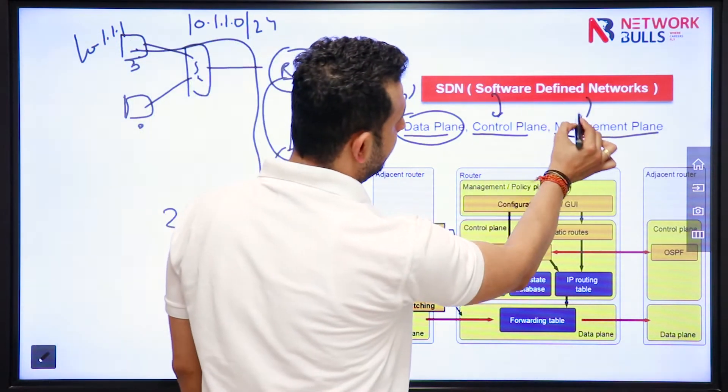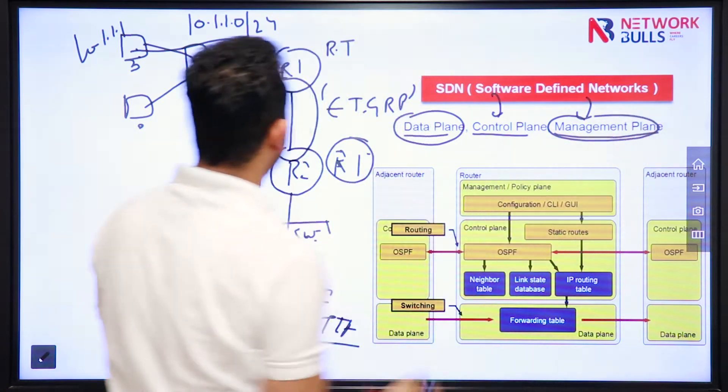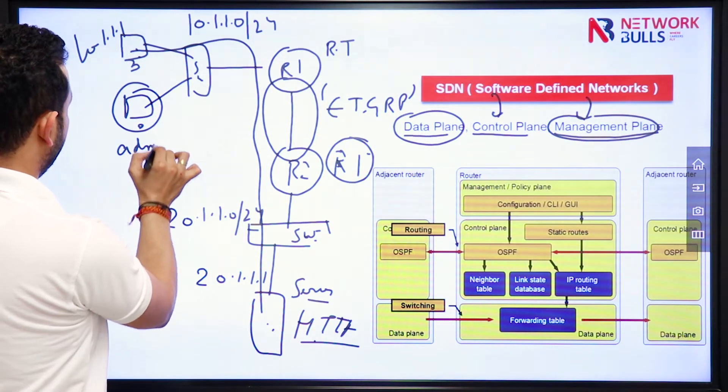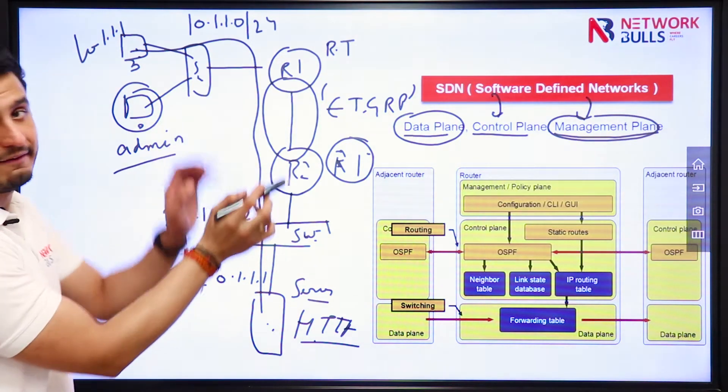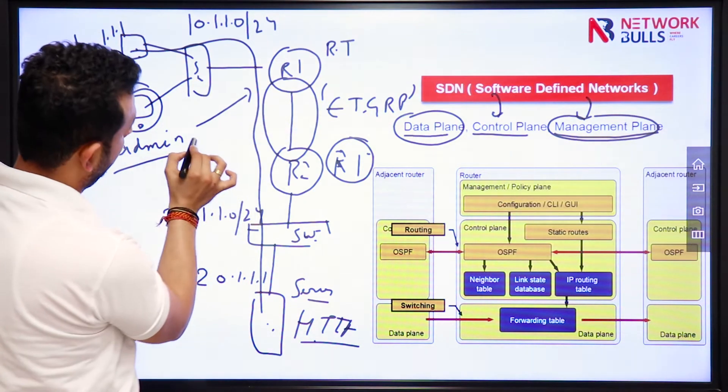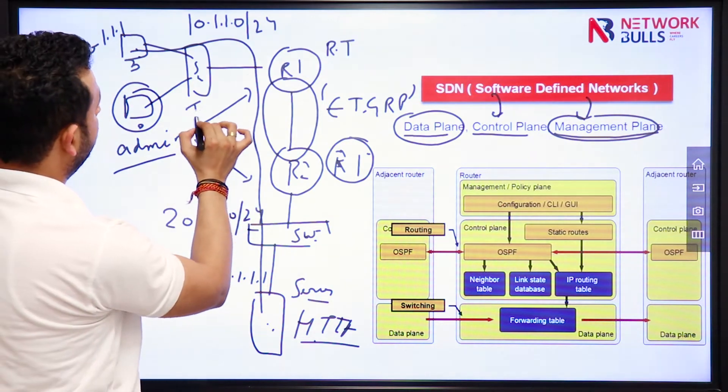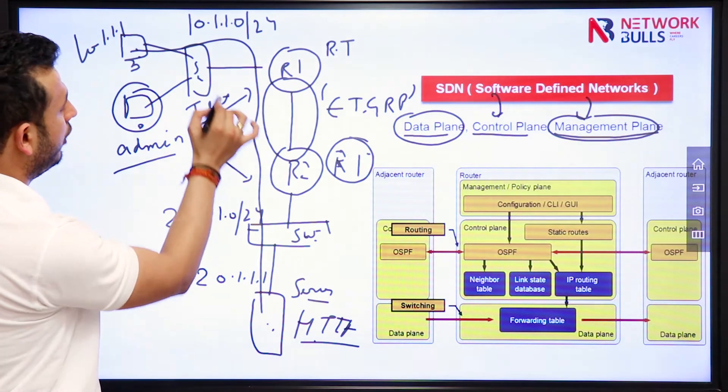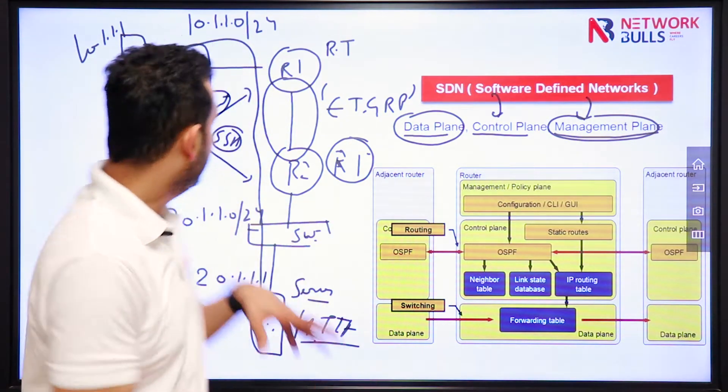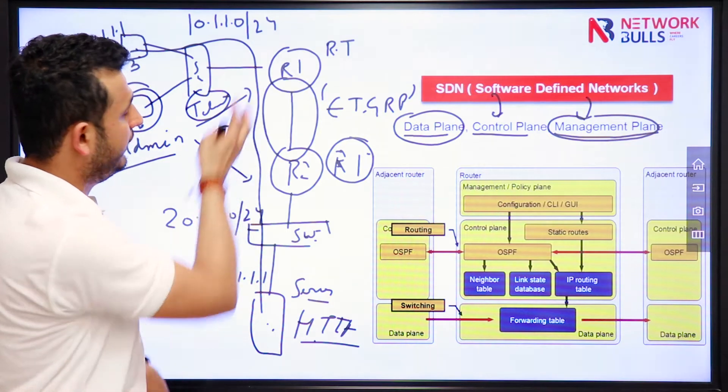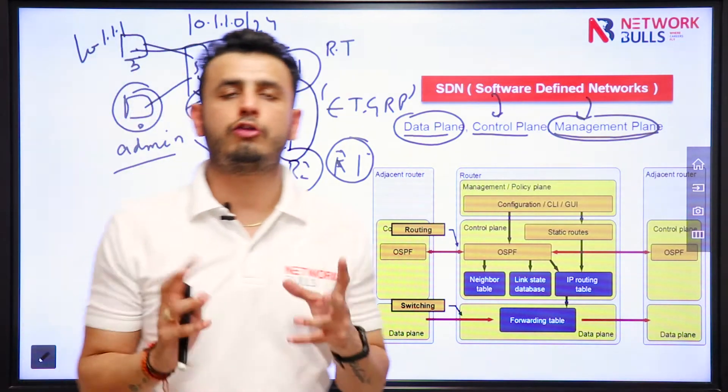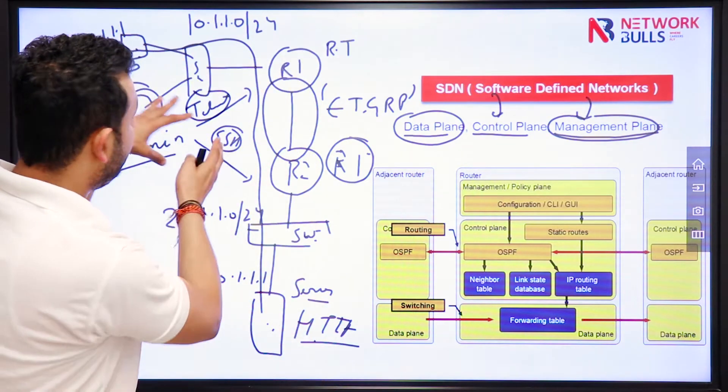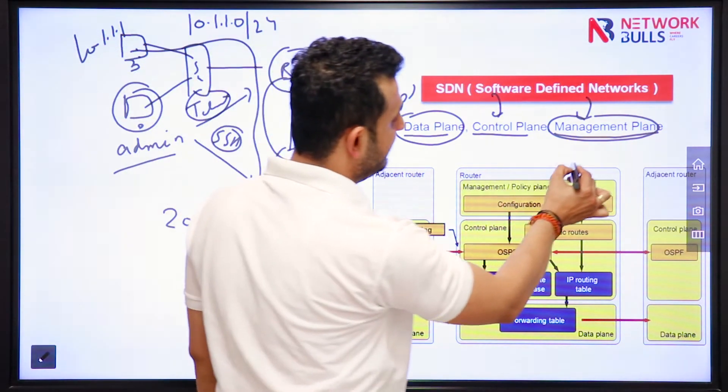At last we have management plane. So management plane can be, let's say this is admin. So if admin wants to manage any device, any router, he can either use Telnet or SSH. Both of these are remote access methods. We can use one of these protocols to take access of the routers or switches which are existing in the network. So Telnet and SSH are basically management plane protocols.